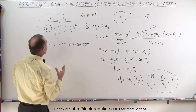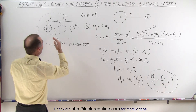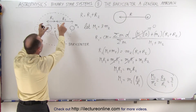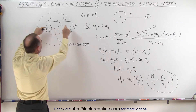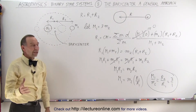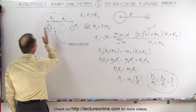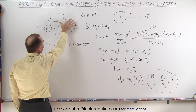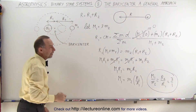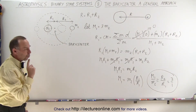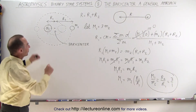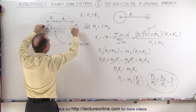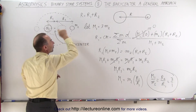That's what we now understand with the barycenter: the ratio of the masses also indicates the ratio of the distances from the barycenter to the center of mass of each of the two objects. So if this mass were 10 times the mass of the other, then R2 would be 10 times the distance of R1, and so forth. Since they're always opposite one another relative to the barycenter, their periods must be equal.